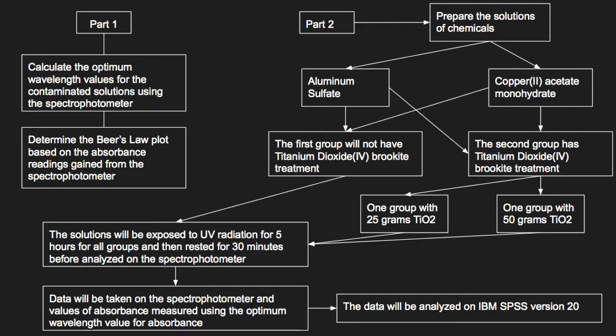Part one of the method will involve calculating the optimum wavelength values for the contaminated solutions using the spectrophotometer. A Beer's law plot will be determined using this data and it will be based on the absorbance readings from the spectrophotometer.